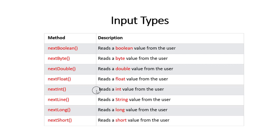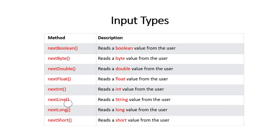The Scanner class provides various methods to read different data types. For a boolean value, we use nextBoolean. For a byte value, we use nextByte. For a double value, we use nextDouble. For an integer value, we use nextInt. For long values, we use nextLong, and for short values, we use nextShort.